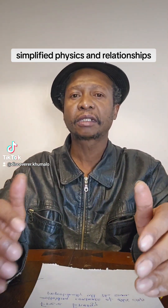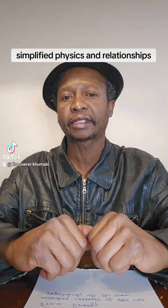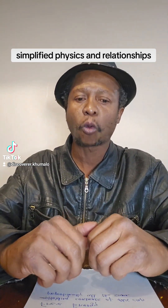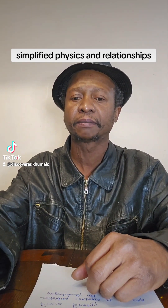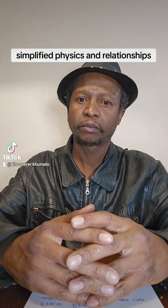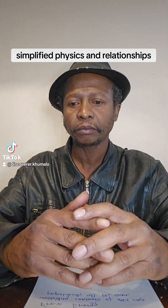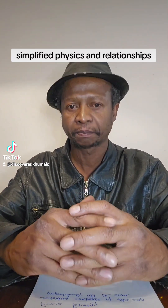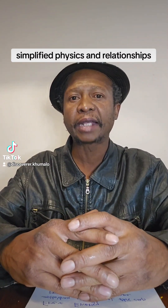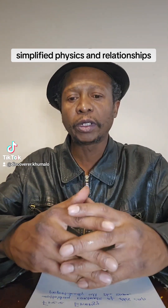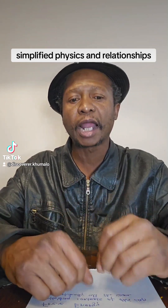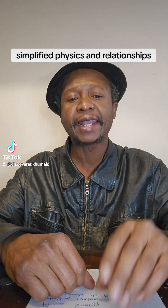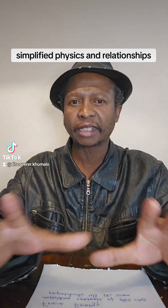Can complex subjects like physics be simplified for non-scientists? This is a question from Quora.com generated by their artificial intelligence. The answer is yes — it can be simplified so that you can understand it simply by understanding one rule: everything is in a relationship, and all relationships cost energy to maintain.